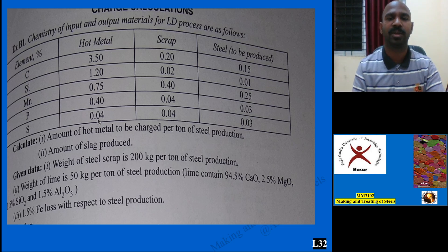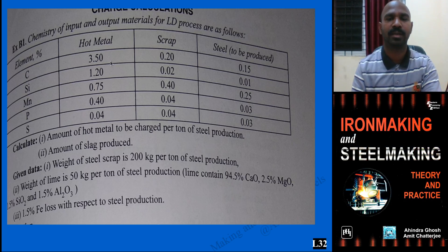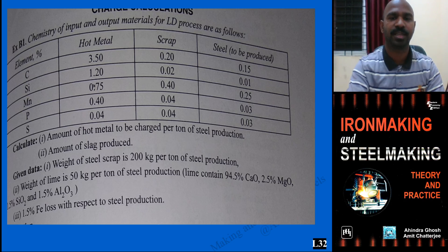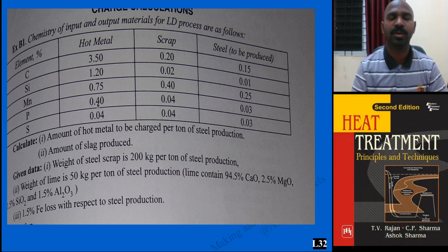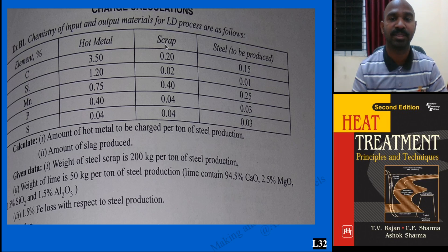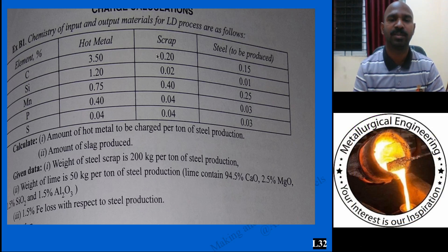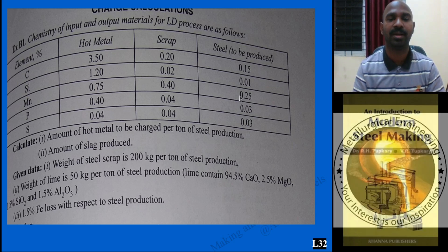The input raw material is pig iron with: 3.5% carbon, 1.2% silicon, and so on for manganese and sulfur by weight percentage. Along with the hot metal, some amount of scrap is also added to get good quality. These combinations are used in the LD steel making process, and we also look at the output.